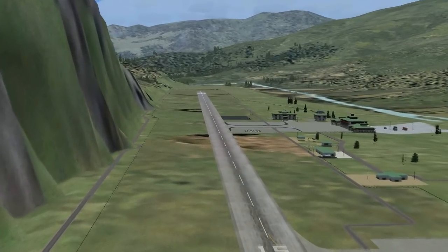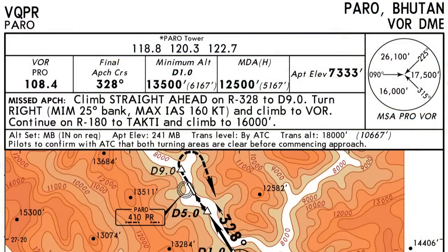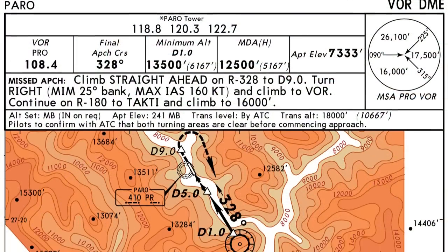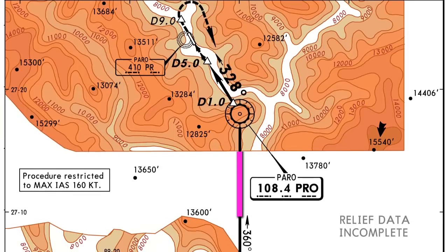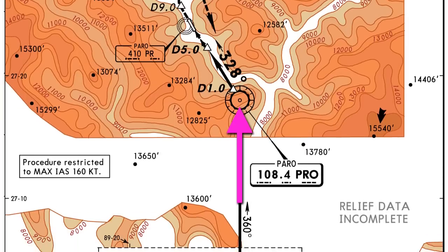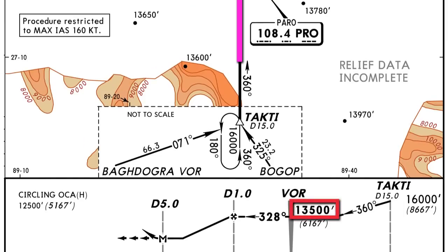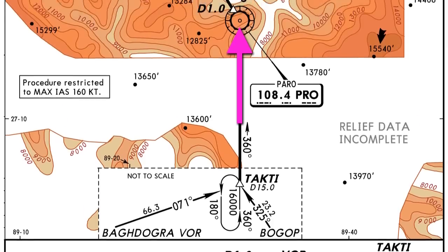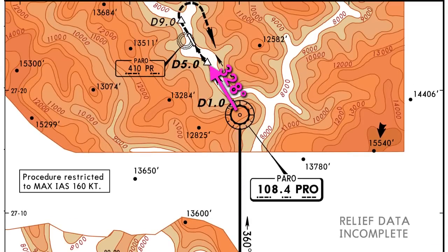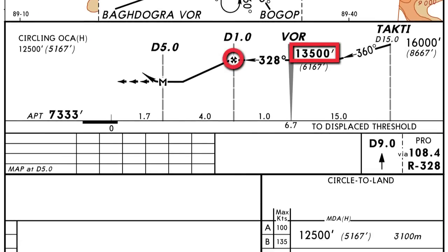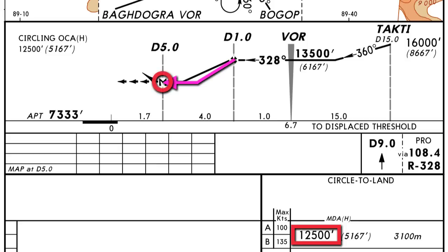The approach at Paro is divided into two parts: the instrument part and the visual part. The first part is a basic VOR approach — we'll be flying to the Paro VOR from the south, reaching it at an altitude of 13,500 feet. As we overfly the VOR, we'll turn to a radial of 328. A mile from the VOR at point D1, we can start descending from 13,500 down to 12,500 feet. We cannot descend below 12,500 feet unless we have the airport in sight. If we don't see the airport by point D5, five miles from the VOR, we have to execute a missed approach.